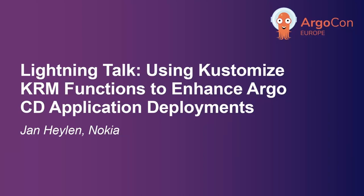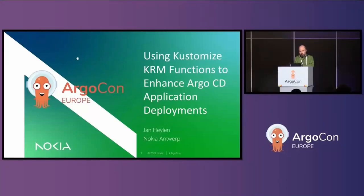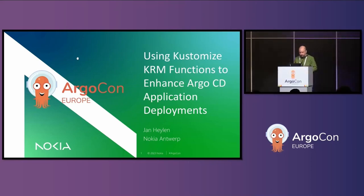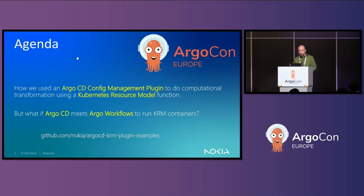We use Argo for a couple of use cases, one of which is to maintain a couple of large CI/CD clusters. Today I will be talking about using customized KRM functions to enhance Argo CD application deployments. I'll be explaining how we used the Argo CD config management plugin to do a computational transformation using a Kubernetes Resource Model (KRM) function. I'll also be pitching what we could have done, namely what if Argo CD meets Argo Workflows to run these KRM functions as containers. The examples I'll be showing can be found on Nokia's GitHub space in the Argo CD KRM plugin examples repo.